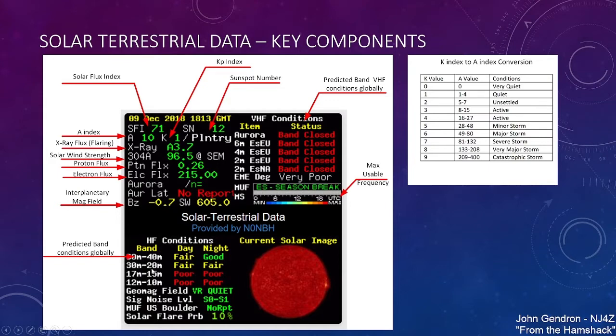And then they give you some general HF conditions down here, band conditions for 40 and 80, 30 and 20, 17, 12, 10. It tells you geomagnetic field. That's going to be akin to the K and the A index. The background signal noise is going to be tied into this geomagnetic field as well. So when you start looking at it going up as regards to the K and the A, and this going from quiet to noisy, to active, to minor storm, major storm, these will jump up. And the solar flare probability is also saying they're looking at the sunspot groups and saying is there a possibility these things may flare within the next 24 hours. So that gives you the basics of what you're looking at there.